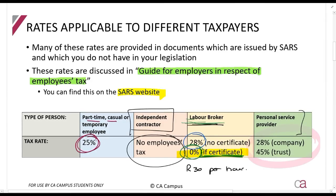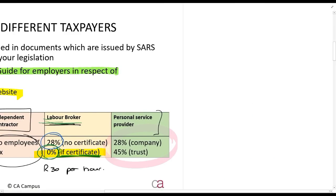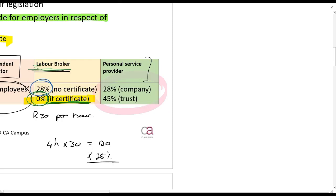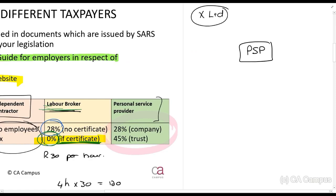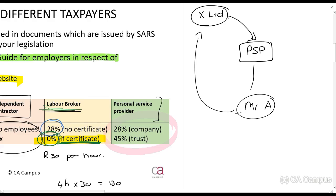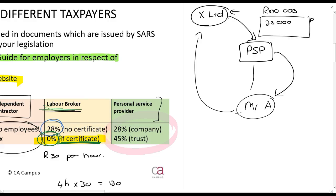Then there is the personal service provider, which you would have studied when looking at different types of taxpayers and companies such as small business corporations. A personal service provider is where a person creates a company that functions as a personal service provider. For example, Mr. A works for his personal service provider company. X Limited wants Mr. A to do work for them, so X Limited pays the personal service provider company, which in turn pays Mr. A. X Limited will deduct 28% PAYE — R28,000 — and pay the remainder, R72,000, as cash.